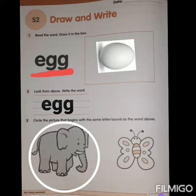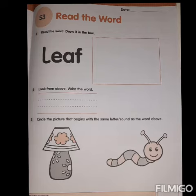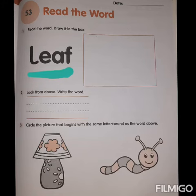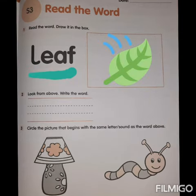Now let's try and do this exercise on page 41 also. It's almost the same. Read the word, draw it in the box. So over here also, what do you have to do? We will have to read the word. The word is L-E-A-F, leaf. Now after reading it, please draw the picture of the leaf in this box, like the manner in which I have done.